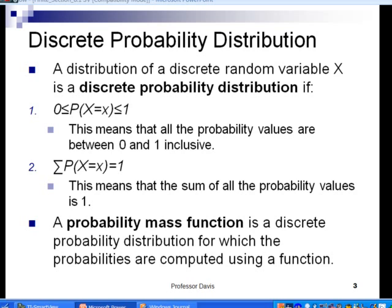In slide number three, we can talk about the discrete probability distribution. We can say that a distribution of a discrete random variable x is a discrete probability distribution if two conditions are met. First, all the probability values have to be between 0 and 1, inclusively. Now remember what we're talking about here: whenever we say the word distribution in statistics, we're talking about a table.